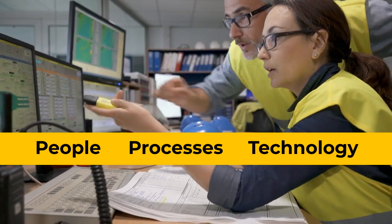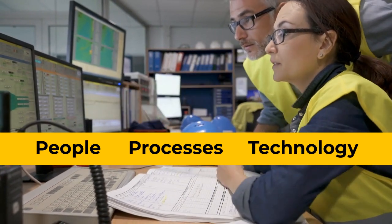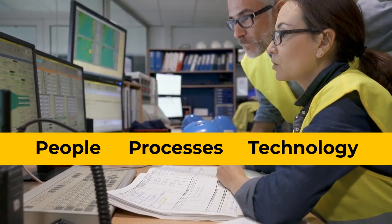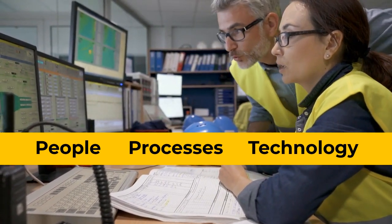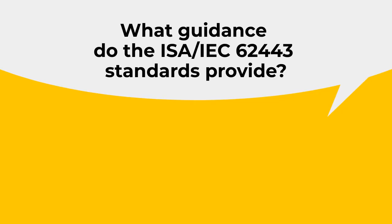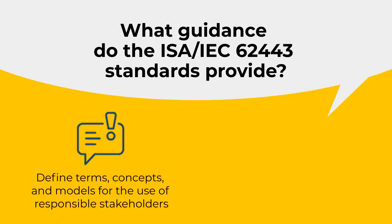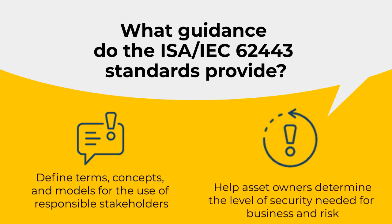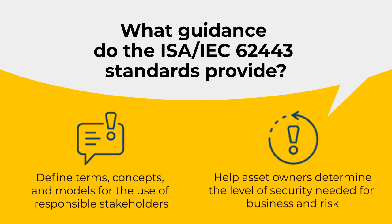The 62443 series addresses the security of industrial automation and control systems throughout their life cycle. The 62443 standards define common terms, concepts, and models that can be used by all stakeholders responsible for control systems cybersecurity, and help asset owners determine the level of security required to meet their unique business and risk needs.